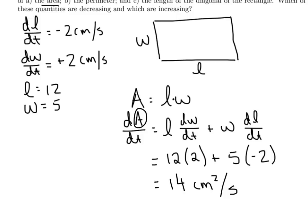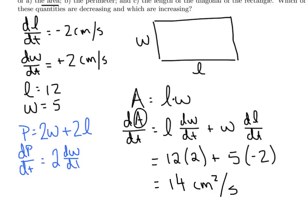Now for perimeter — this is probably the easiest of the three. Perimeter P = 2W + 2L. Differentiating with respect to time: dP/dt = 2(dW/dt) + 2(dL/dt) = 2(+2) + 2(−2) = +4 − 4 = 0. So dP/dt = 0 centimeters per second. It makes sense — one side is increasing at the same rate the other is decreasing, so they balance out and the total perimeter remains the same.